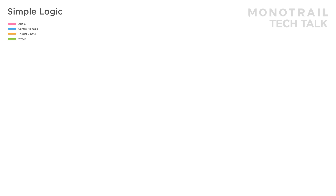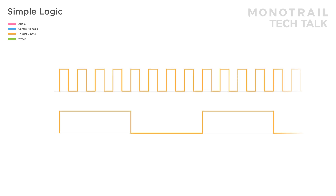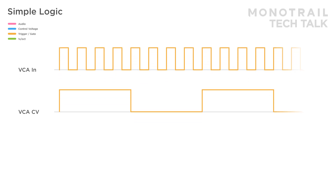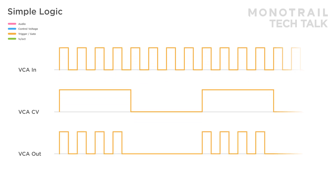Just a single VCA can function as a voltage-controlled AND logic gate. Just in case AND logic is unclear — here you see two gate patterns generated by a clock divider. The second is four times as slow as the first. If you use the first signal as the input of a VCA and the second signal to open the VCA, the first signal will only pass on to the output of the VCA if both signals are high. This is AND logic.